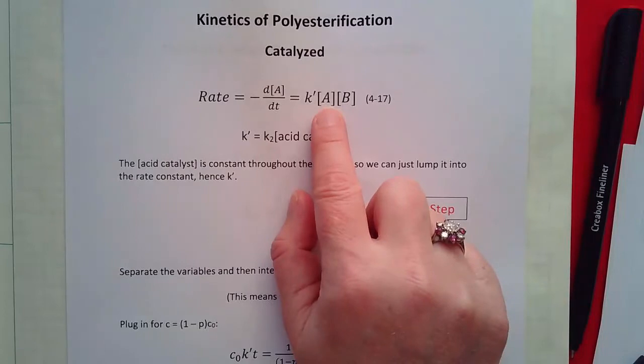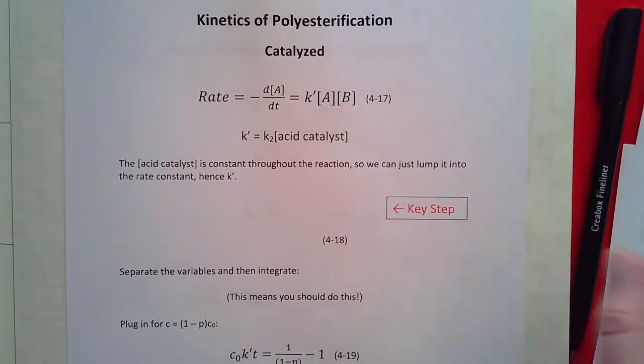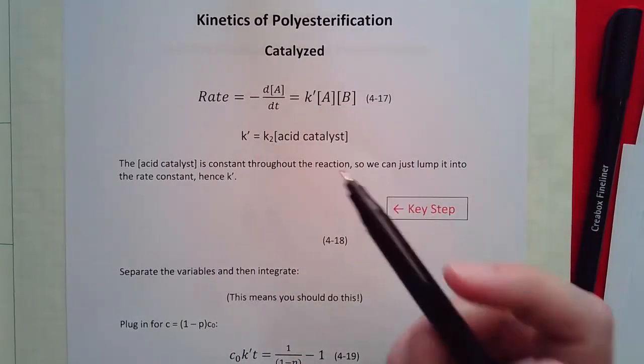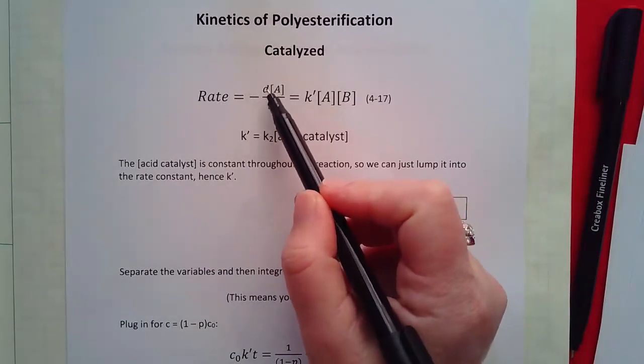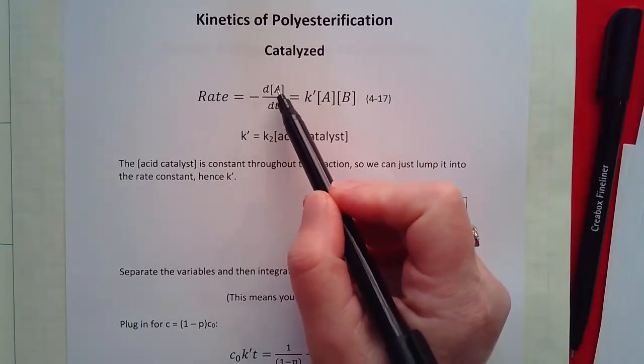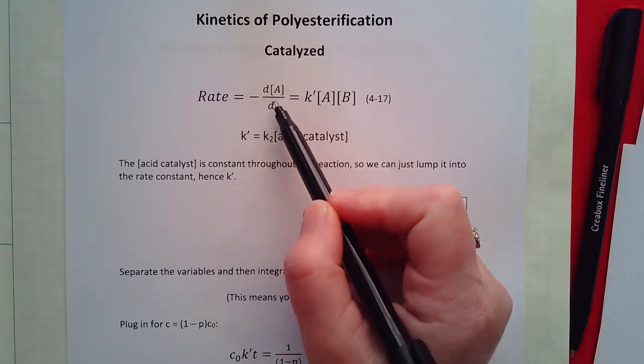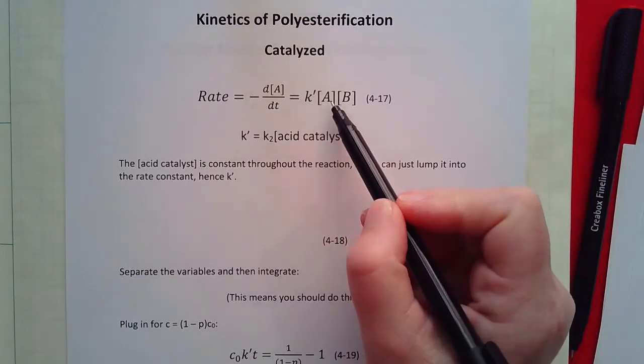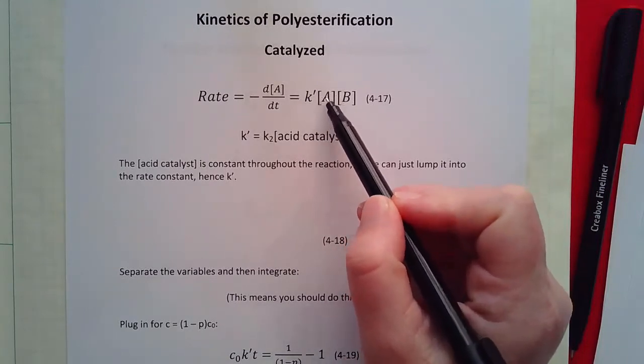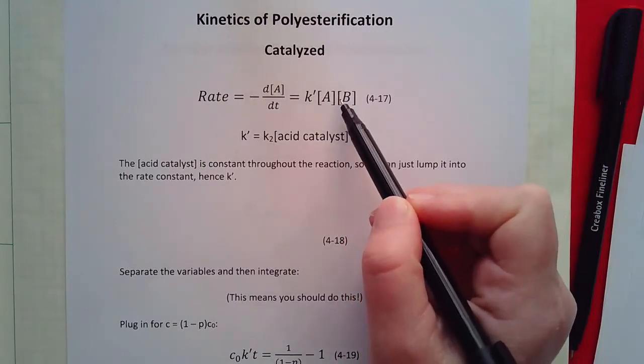Okay, so A is the concentration of acid groups. So here we go. The rate is measured by the decrease in the acid concentration as a function of time times the rate constant K prime times the concentration of acid groups times the concentration of alcohol groups.